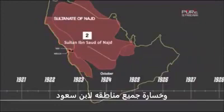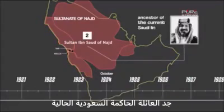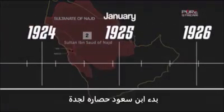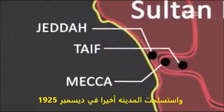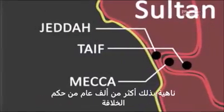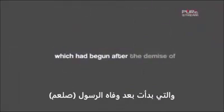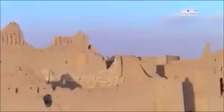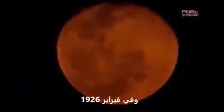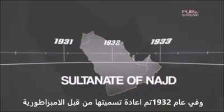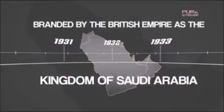After losing Mecca, the Sharif had to flee and lose his entire territory to Ibn Saud, ancestor of the current Saudi lineage. In January 1925, Ibn Saud began his siege of Jeddah, and the city finally surrendered in December 1925, bringing an end to over 1,000 years of caliphate rule which had begun after the demise of Prophet Muhammad. In February 1926, the new unified Wahhabi state was rebranded by the Empire in 1932 as the Kingdom of Saudi Arabia.